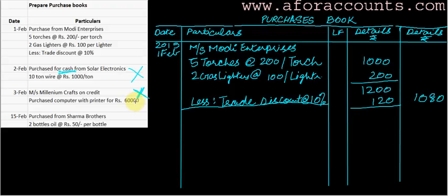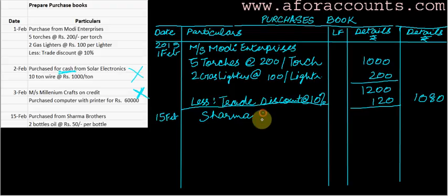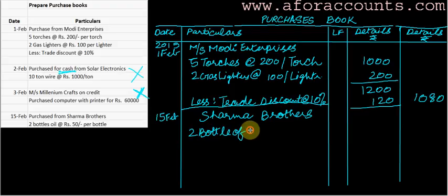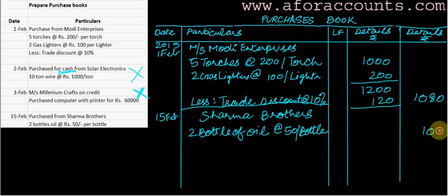15th February: purchased from Sharma Brothers two bottles of oil at the rate of 50 per bottle — may be used for greasing or similar purposes. I enter this on 15th February. First, I write the party's name: Sharma Brothers. Two bottles of oil at the rate of 50 per bottle comes to 100, which I can put directly in the net column. No more transactions after this until 28th February.